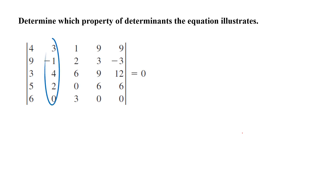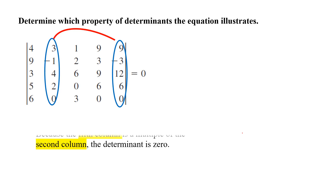Pay attention to the second column and the last column — they are multiples of each other. You can easily see that multiplying the second column by 3 results in the last column. So since the fifth column is a multiple of the second column, the determinant is equal to 0.